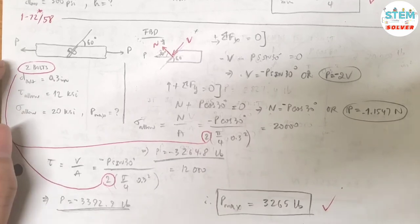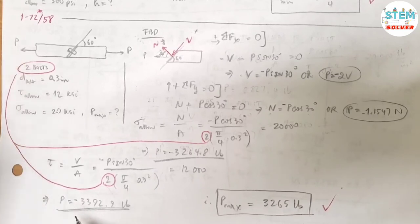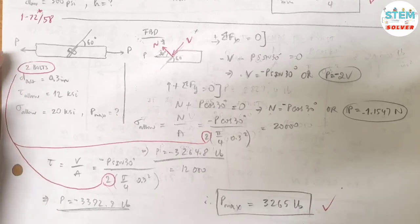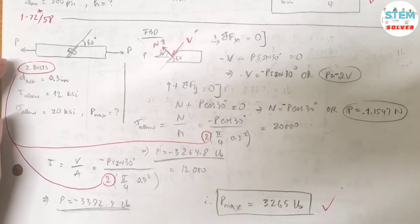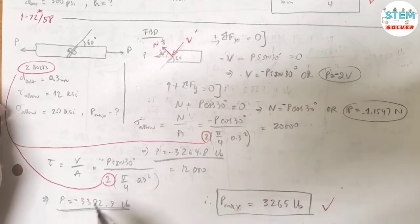Okay, so if this P is pointing to the left, this negative sign indicates that it's pointing to the right. But if it's default that the P force is pointing to the left, then the process of what you have done is just the opposite way. So you have up here, you have positive P sine 30. Then over here, you have positive, all these positive. Let's just switch the negative sign.